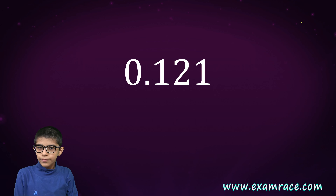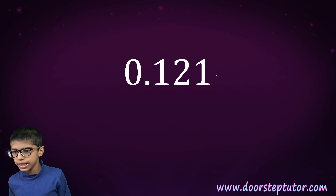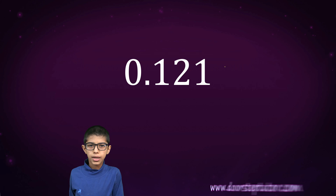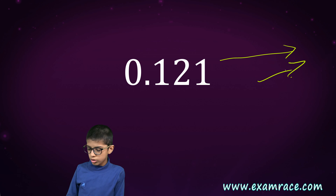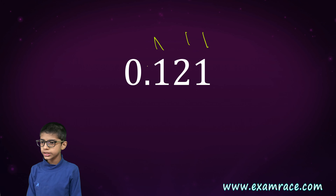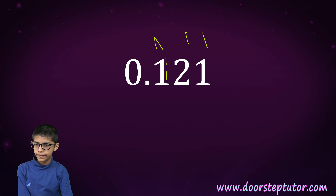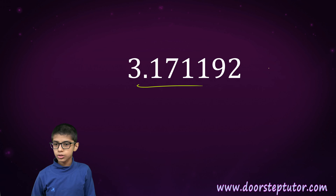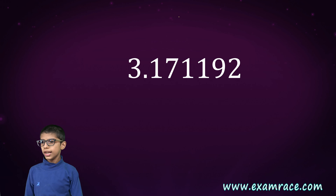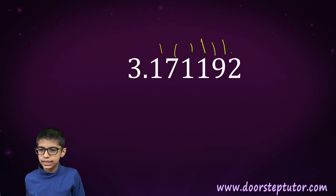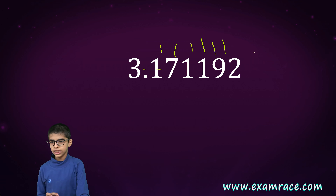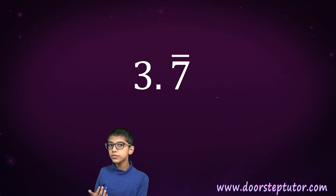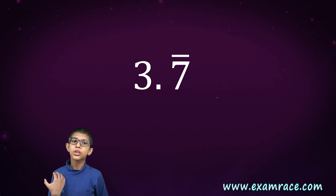First, if I have a number 0.121, is this number going on and on? No, it stops at three decimal places — 0.121. As there are three digits, this number stops. Another number stops at six decimal places: 1, 2, 3, 4, 5, 6 — and at six decimal places it stops. Now we will learn some numbers which do not stop at any point — they go on and on.